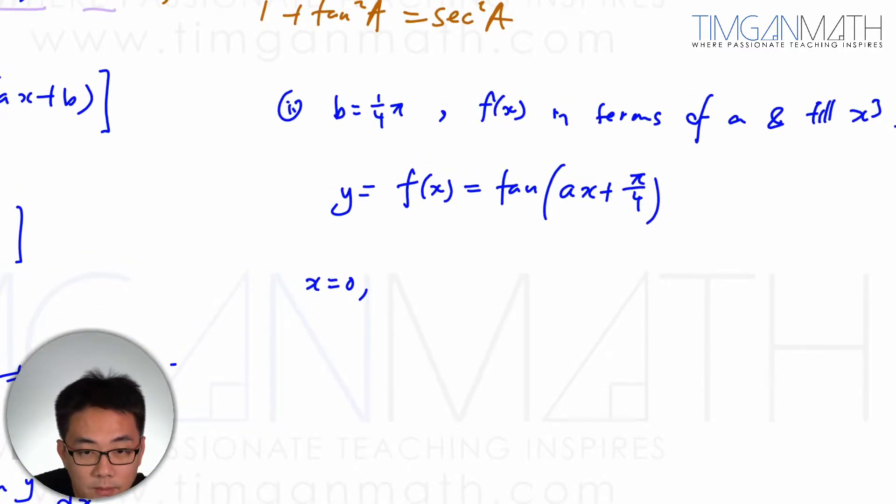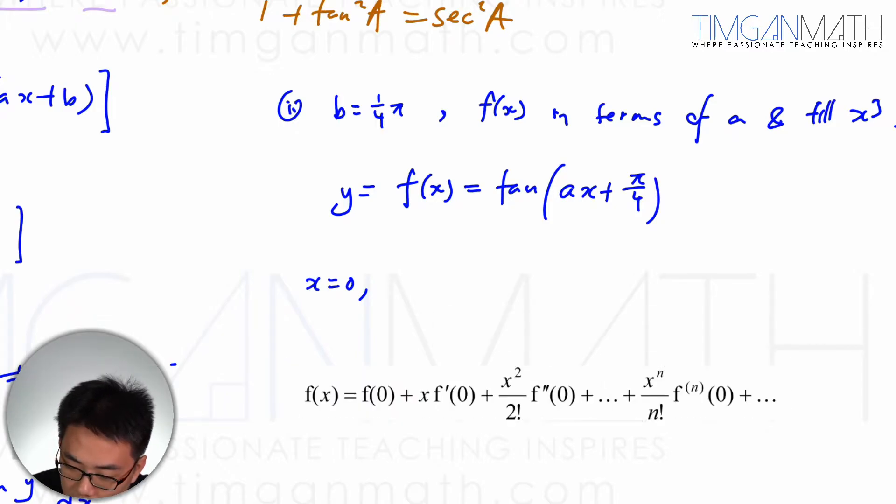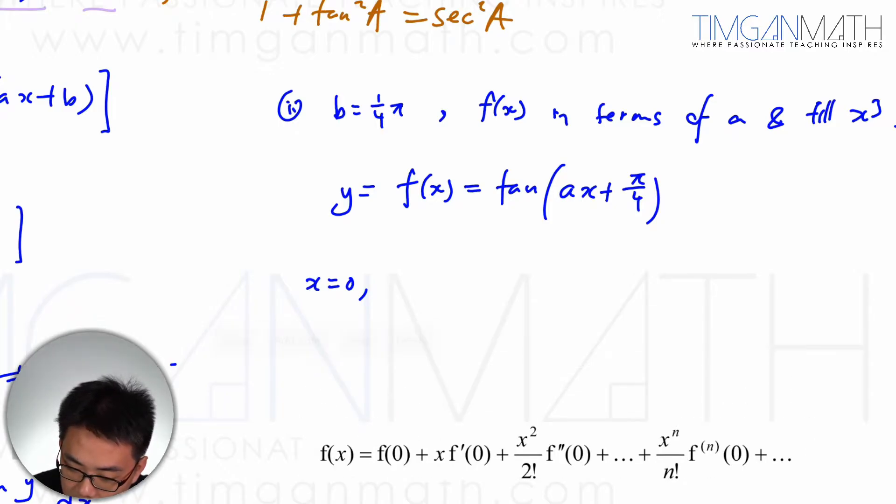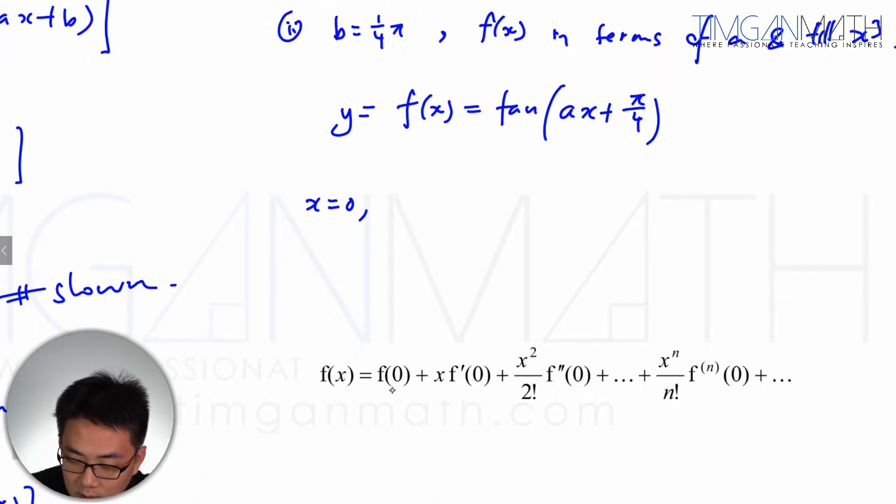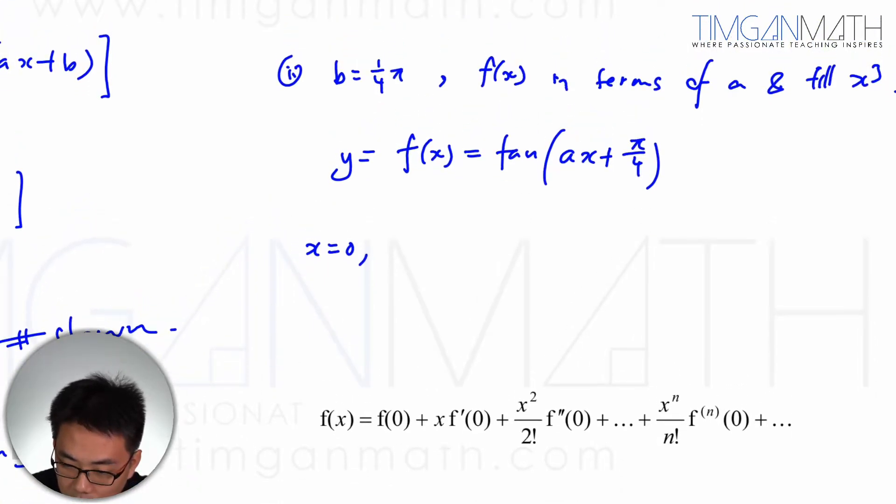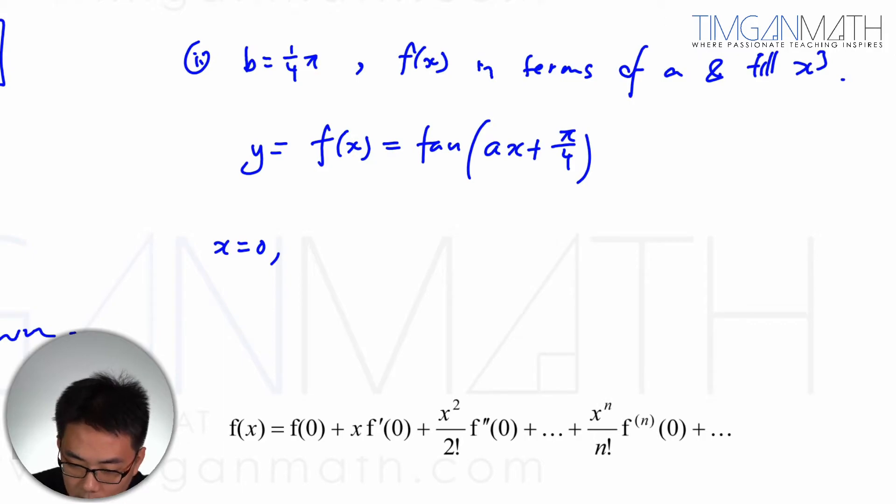So the expression here for f(x) is using Maclaurin series. So I'm going to bring out Maclaurin series here. So this is the Maclaurin series from our MF26. And you realize that to find f(x), you need x is 0. And also, now that we have b equals to 1 quarter, so we're just going to go through the quest of finding each and every one.